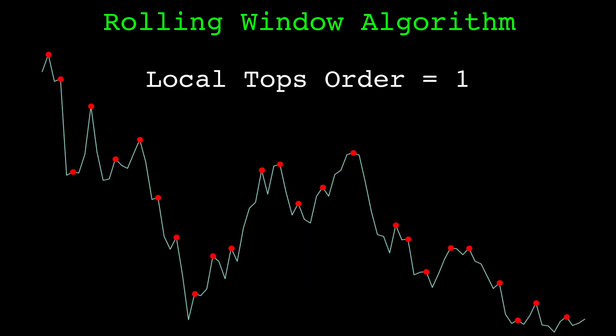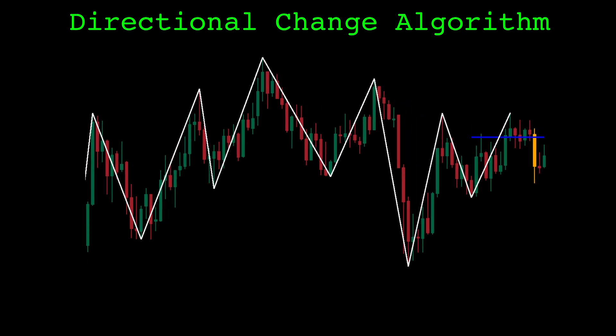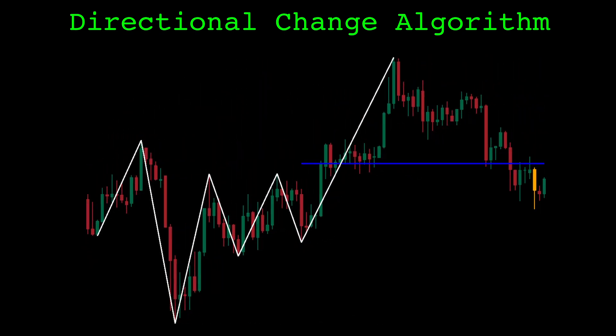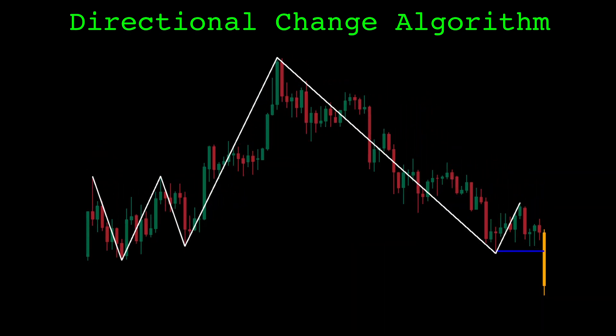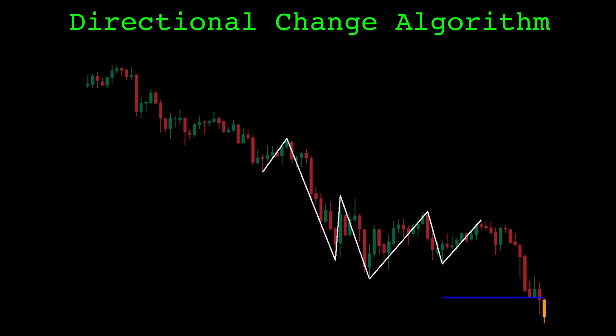I've seen this algorithm called many different things, and it is a very obvious way to find local tops and bottoms. Our second algorithm is directional change, sometimes called zigzag. This algorithm identifies tops and bottoms when the price has retraced a given amount from its most recent high or low price.